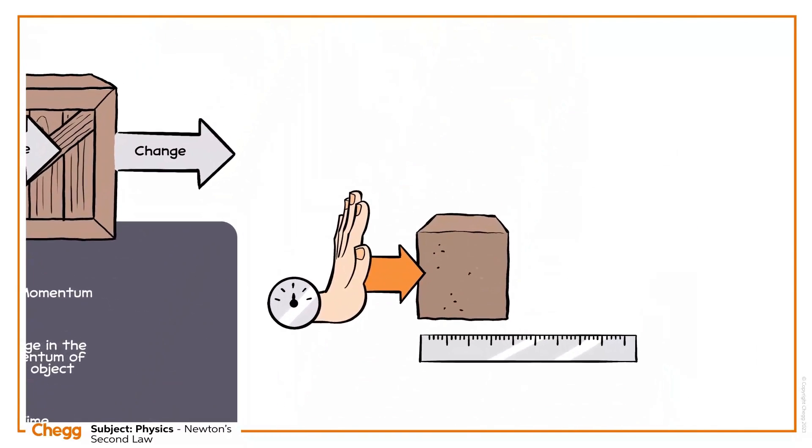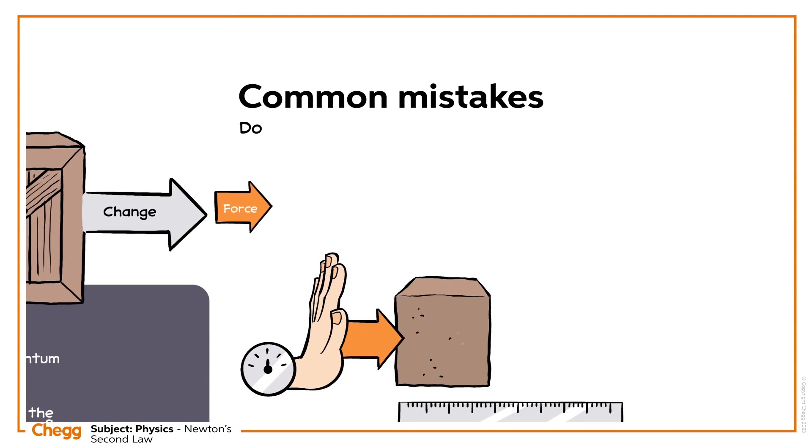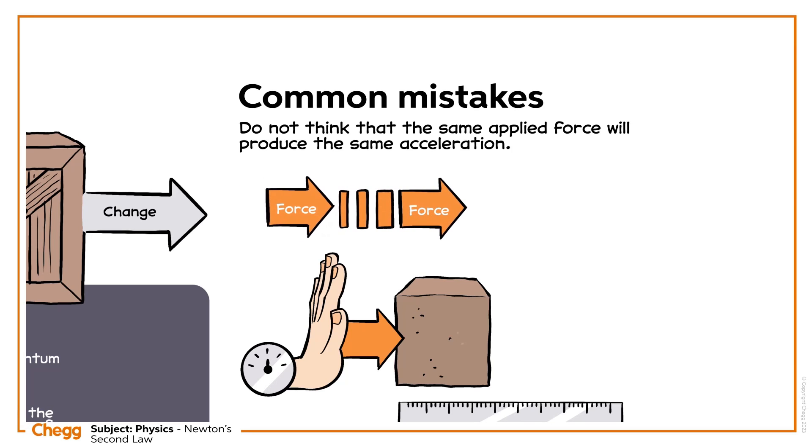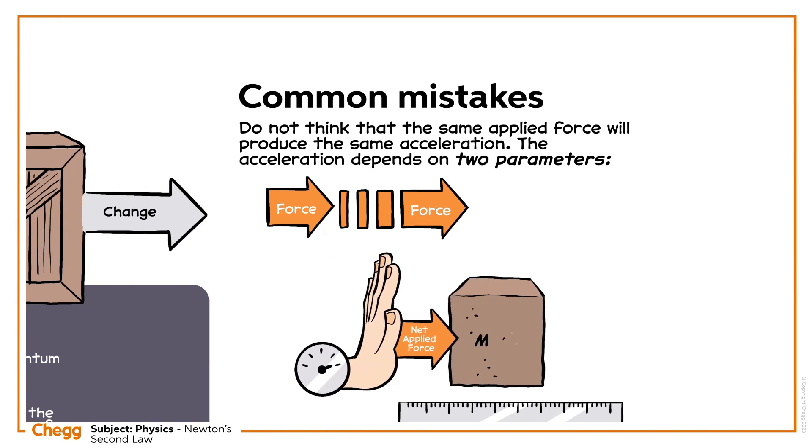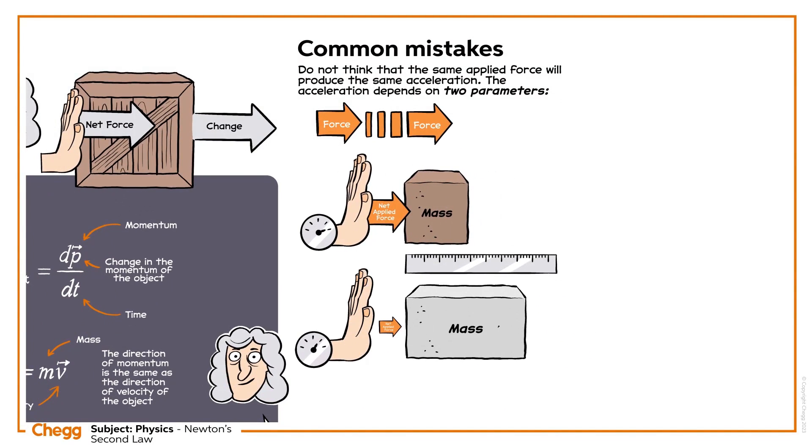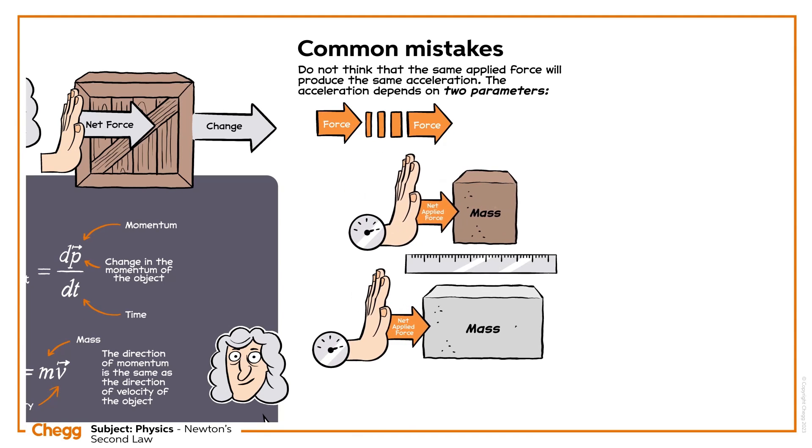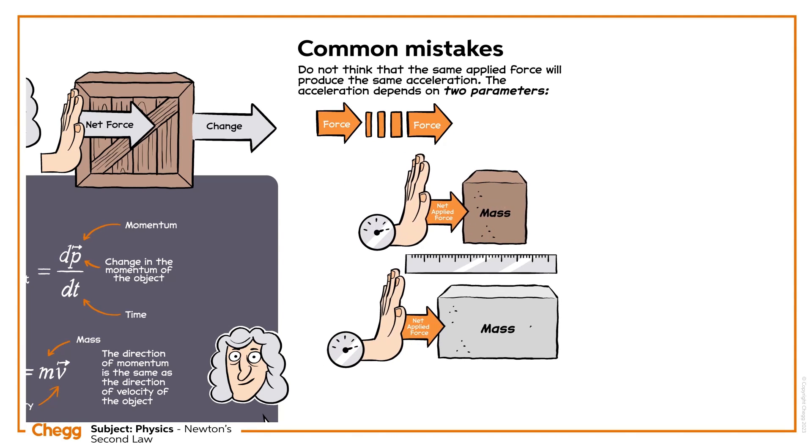Let's talk about common mistakes. Do not think that the same applied force will produce the same acceleration. The acceleration depends on two parameters: force and mass. If the same force is applied to two different masses, then the acceleration will vary inversely with mass.